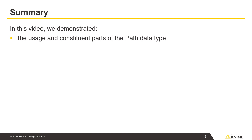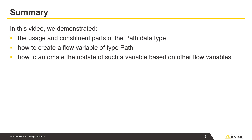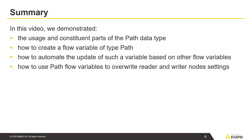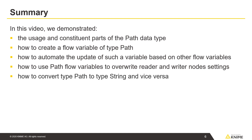In this video, we demonstrated the usage and constituent parts of the path data type, how to create a flow variable of type path, how to automate the update of such a variable based on other flow variables, how to use path flow variables to overwrite reader and writer node settings, and how to convert type path to type string and vice versa.